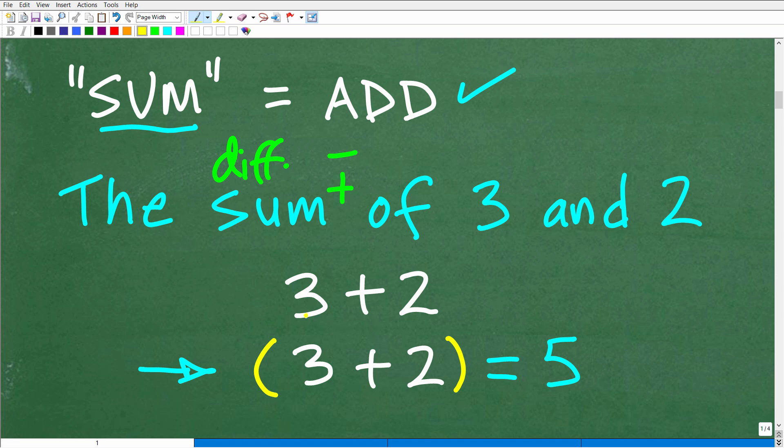So the sum of 3 and 2, yes, you can write it as 3 plus 2, but I want you to write it as a group. This is going to save you from making potential mistakes, especially in algebra. Just get in that habit.